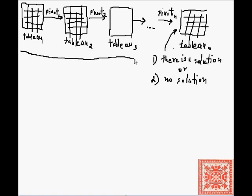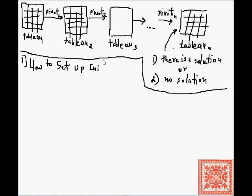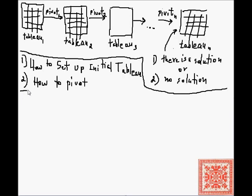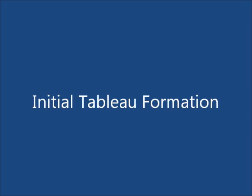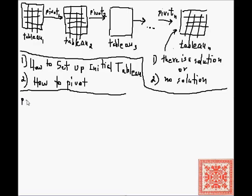In this screencast, we will talk about two questions related to linear programming and the simplex method. First, how to set up the initial tableau — the so-called initial tableau formation problem — from the set of constraints and the objective function. The second question is how to carry out the pivoting operation. Once we have those two, we can discuss and define the simplex method.